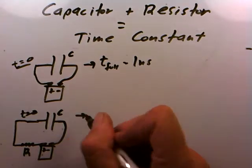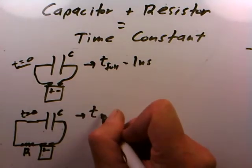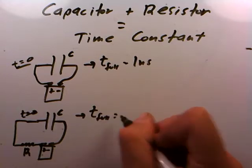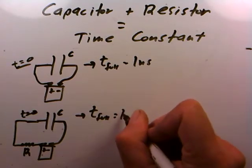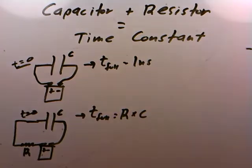It turns out in this case that the time it takes to be full is equal to the product you get when you multiply the R you chose by the C.